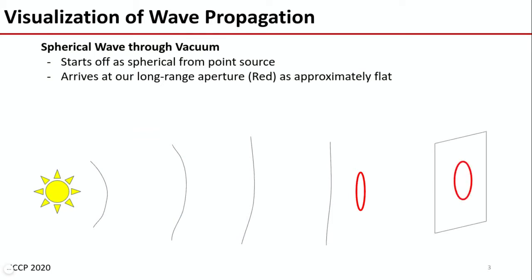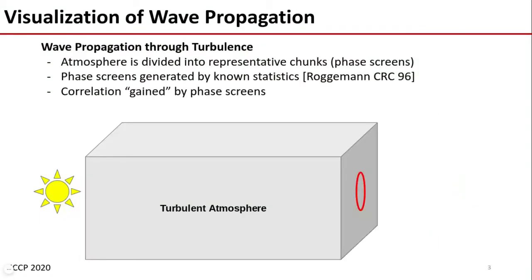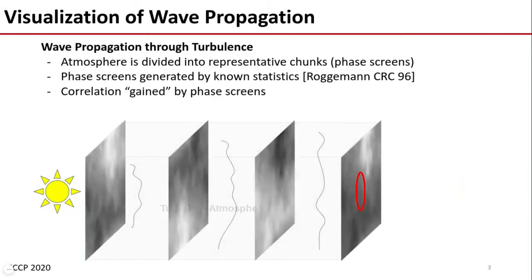In a vacuum, we then have no phase distortions and get a resulting diffraction point spread function. When we introduce randomness into the atmosphere, we get random pockets of different indices of refraction, which will cause distortions in our wave. An easy way to visualize this is to divide the atmosphere into chunks and let the wave propagate through, becoming dented by the representative phase screens.